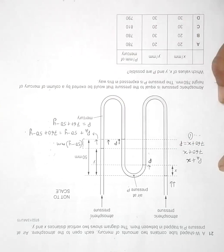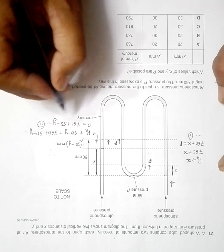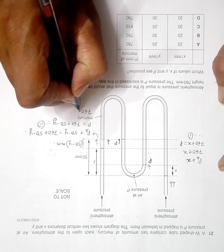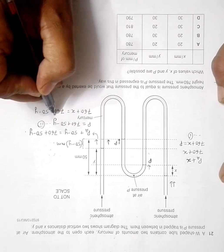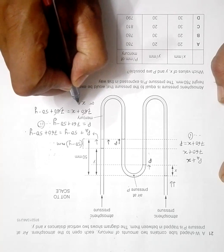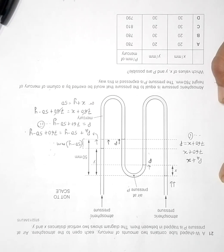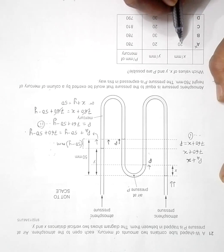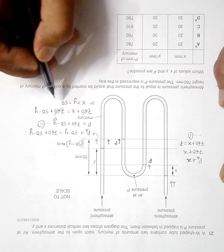Comparing the two equations — 760 plus x equals 760 plus 50 minus y — the 760 cancels, giving x plus y equals 50 millimeters. Checking the answer choices: option A gives 20 plus 20 equals 40, which is incorrect. Option D gives 30 plus 30 equals 60, also incorrect. So x plus y must equal 50.